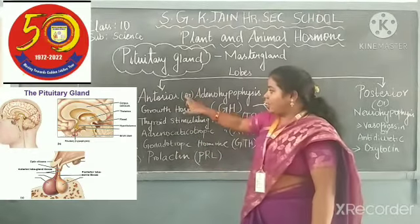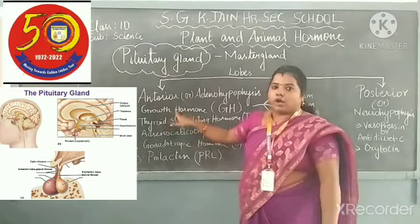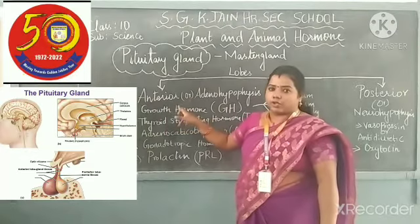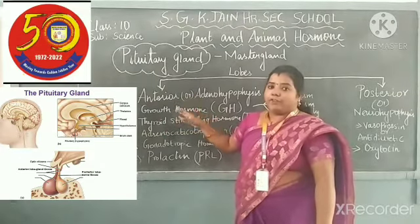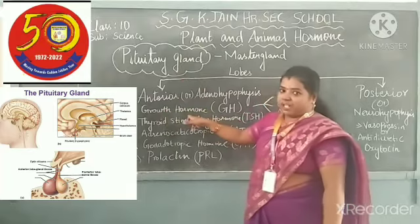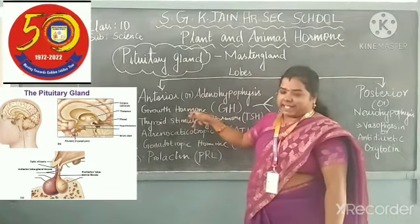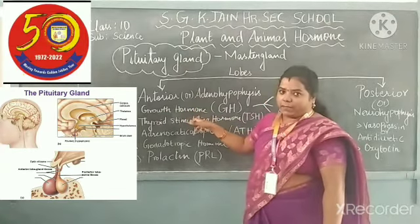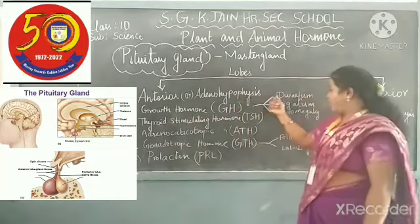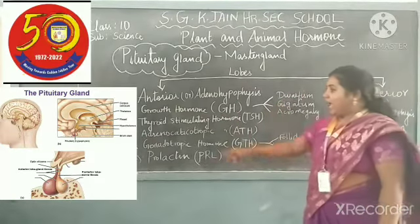In the anterior lobe, it starts with the growth hormone. The growth hormone is helpful for growth only. If it is not secreted properly, it leads to diseases like dwarfism, gigantism, and acromegaly.